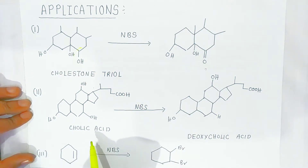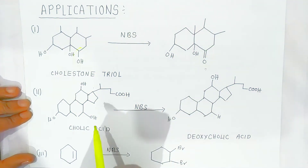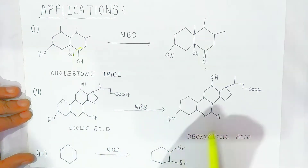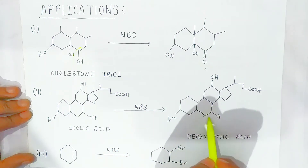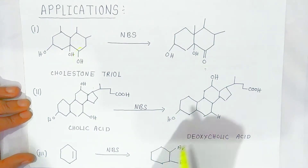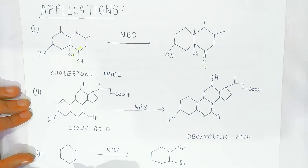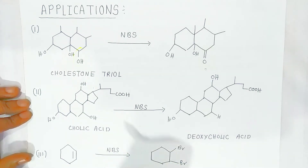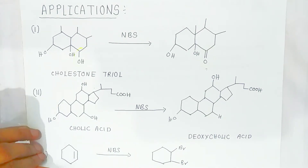Here, colic acid is present. The hydroxy group is converted into dehydroxycolic acid. Also, a ring double-bond compound is oxidized and it will give you a bromine-type compound. So this is the application of N-bromosuccinimide.